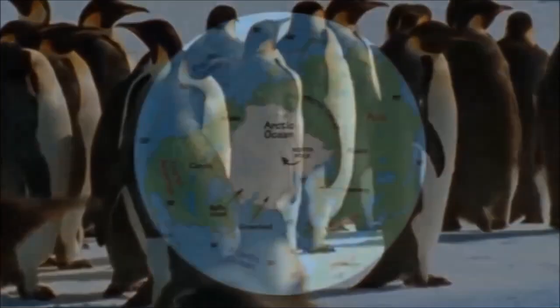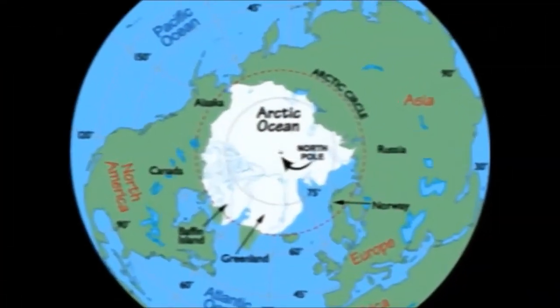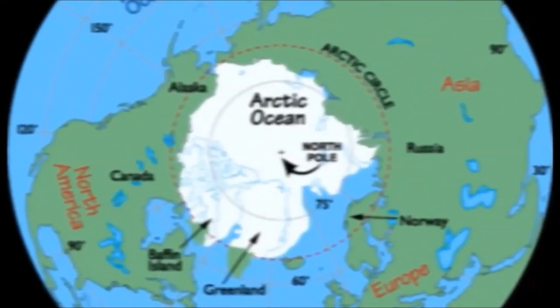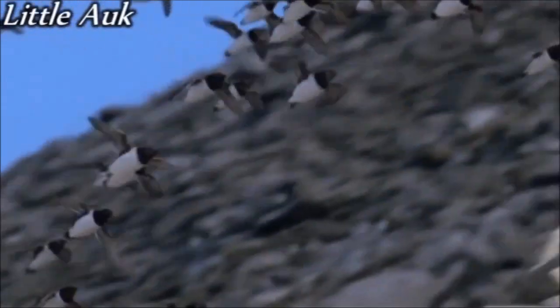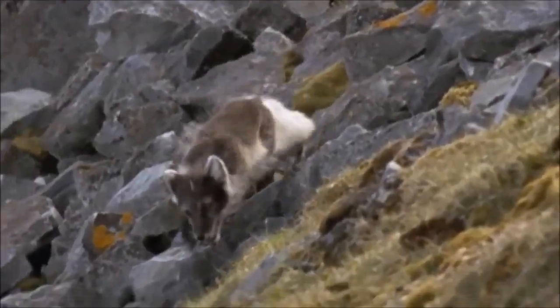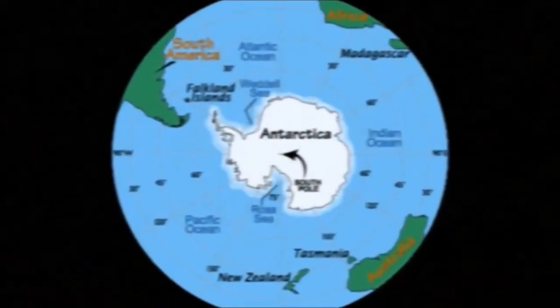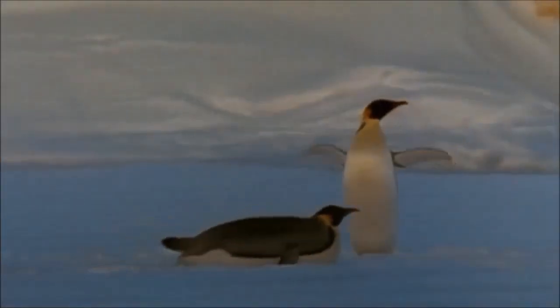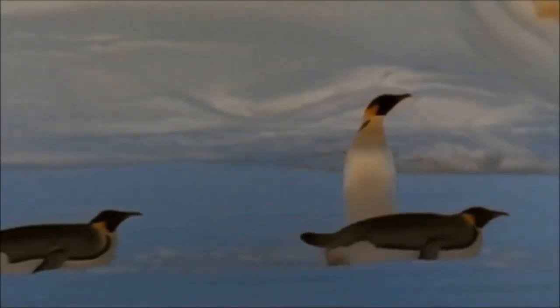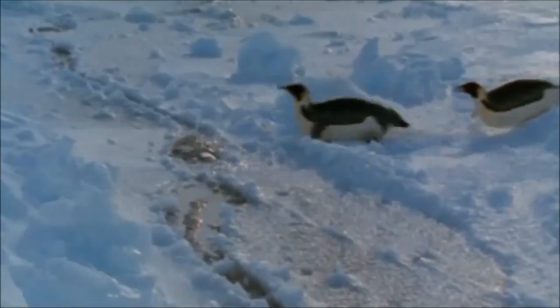Take, for example, the penguin. In regions of the world accessible to land-based predators such as the Arctic, birds like the little auk, which very closely resembled the penguin, require the ability to fly not only to find food, but to escape predation. However, on the remote continent of Antarctica, which is inaccessible to land-based predators, the ancestors of the penguin were free to move along the ground as they pleased, encouraged to spend more time hunting in the water than in the air, and thereby modifying their wings once used for flight into flippers that now allow them to swim.